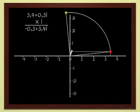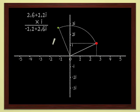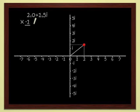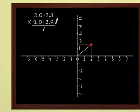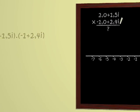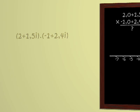And finally, we can multiply any two complex numbers with no problem whatsoever. For instance, let's try to multiply 2 plus 1.5i and 1 plus 2.4i. We proceed as usual. We first multiply by 2, and then by 1.5i, and we add the results. Therefore, we get...